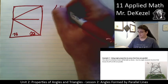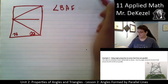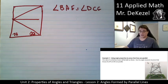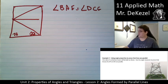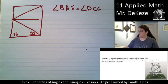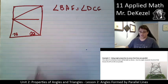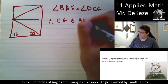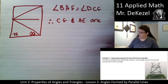I know that angle BAE is equal to angle DCG. So if those corresponding angles are the same, that means those lines are parallel. If this is the transversal and these are the parallel lines, if the corresponding angles are the same, the lines must be parallel. Therefore, CG and AE are parallel.